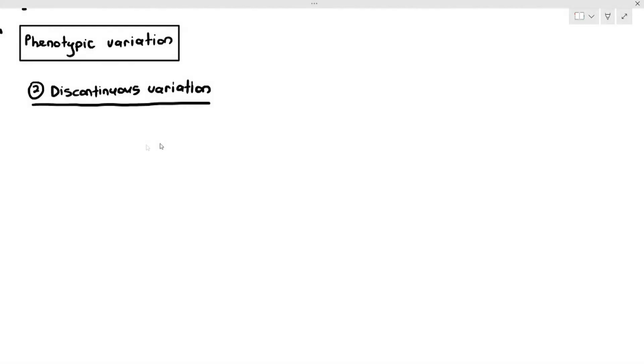In this video, we are going to be looking at the second type of phenotypic variation, which is referred to as discontinuous variation. Discontinuous variation is quite straightforward. It's not as complicated as continuous variation in the previous video. So what exactly is that all about? Discontinuous variation is what happens when the differences are more qualitative,